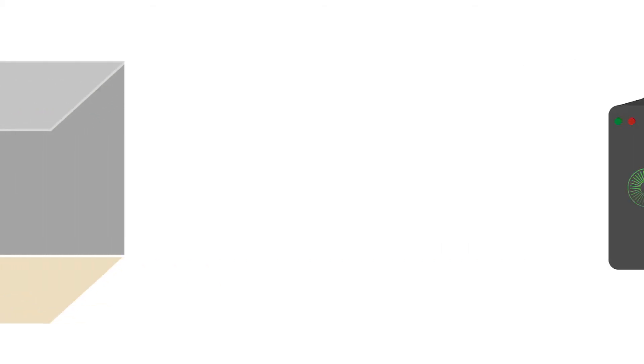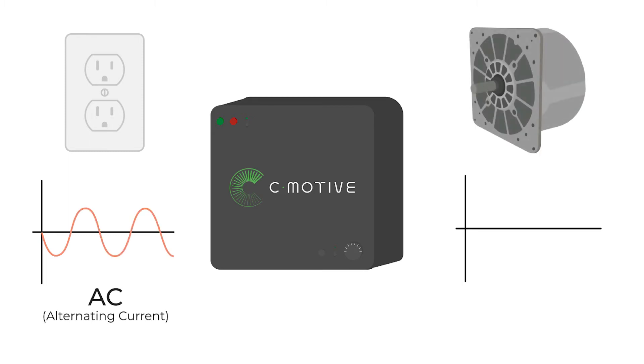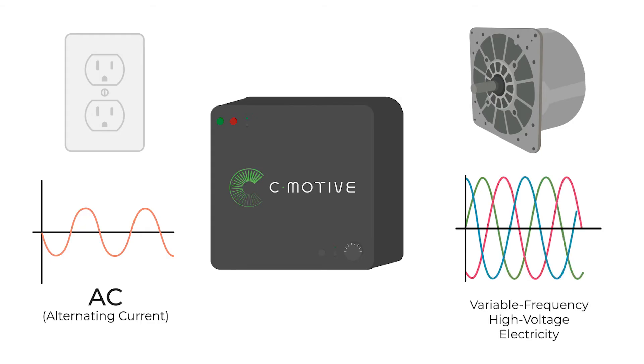The same thing happens inside the machine's drive, converting the electricity that comes out of an outlet, referred to as AC for alternating current, into variable frequency high voltage electricity for the machine.